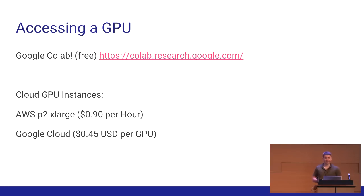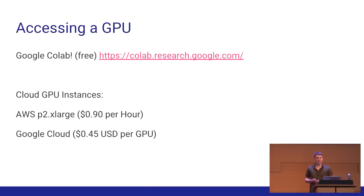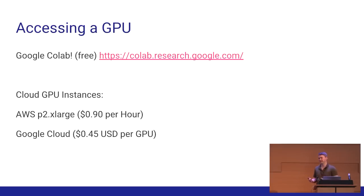To conclude — on accessing a GPU: Google Colab is a free browser-based notebook that gives you GPU access; you can install CuPy and PyCUDA on it. Cloud GPU instances are also increasingly accessible — on AWS you can get one for less than a dollar an hour, and Google Cloud pricing is similar, making it affordable to spend a few hours experimenting.